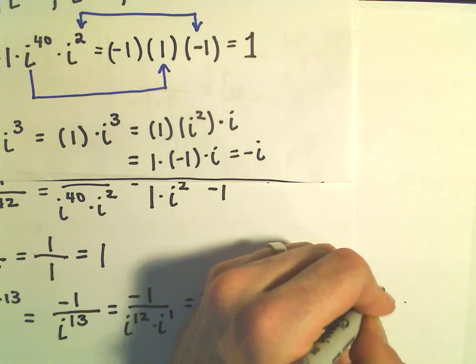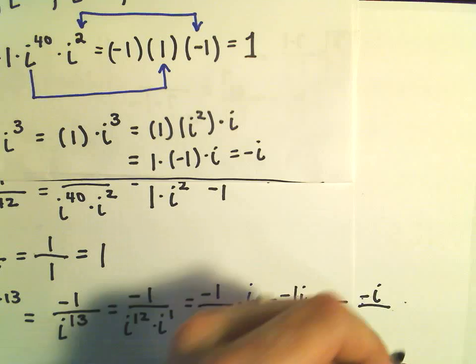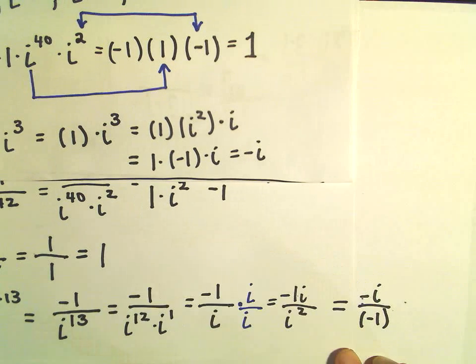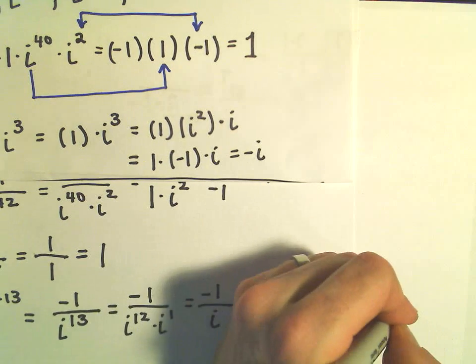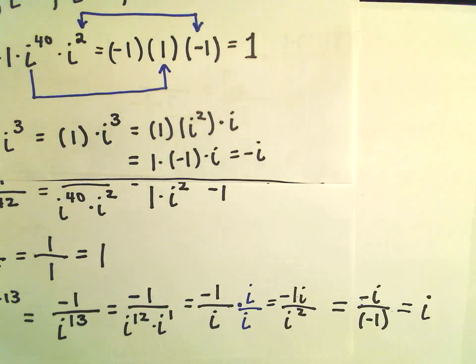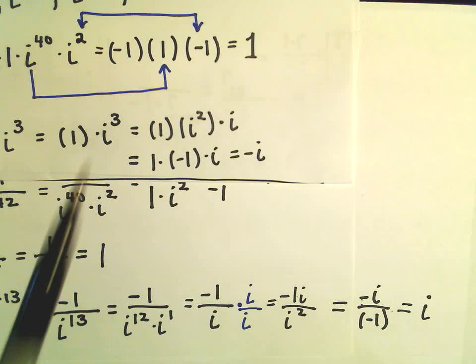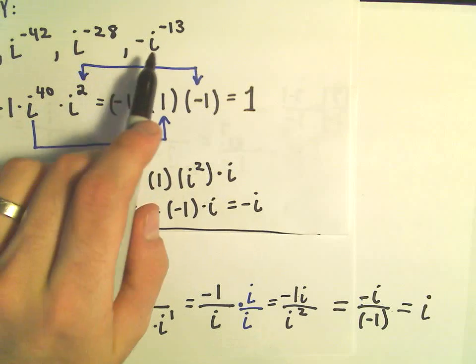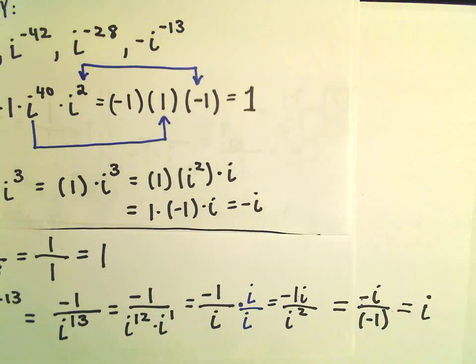So we've got negative i on top, but i squared is equal to negative 1. So now if we cancel the negative and the negative, we'll simply be left with positive i to the first power. So it turns out that negative i to the negative 13th is equivalent to just i to the first power.